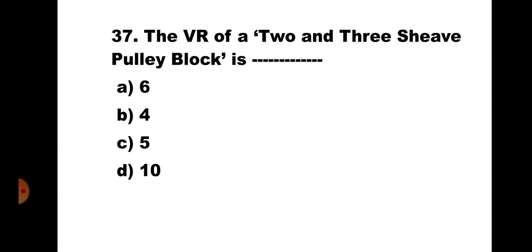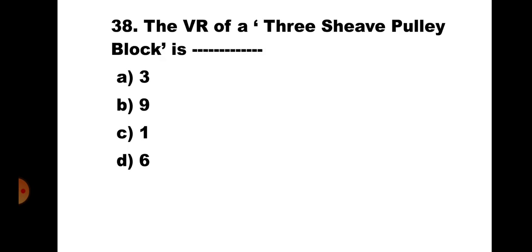Question number 37: The VR of a 2 and 3 shoe pulley block is: A) 6, B) 4, C) 5, D) 10. This is again the second system of pulleys, with 2 pulleys in the fixed block and 3 in the movable block — total 5 pulleys. VR = total number of pulleys = 5. The correct answer is C) 5.